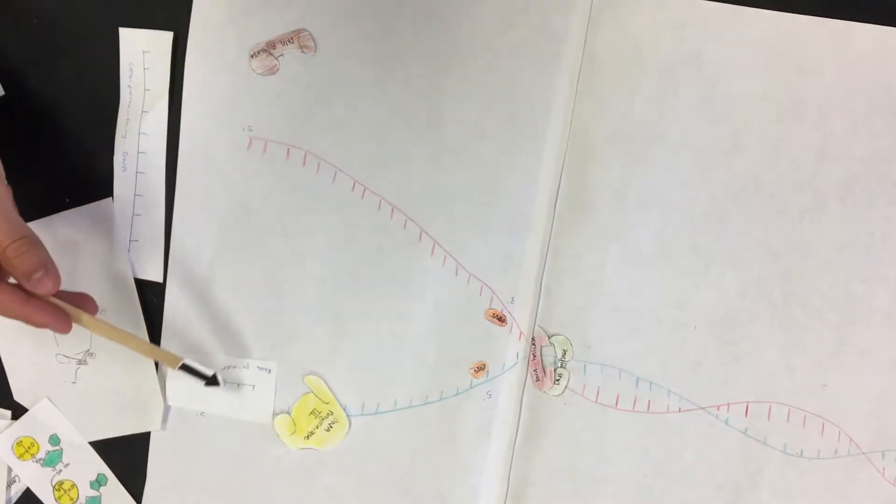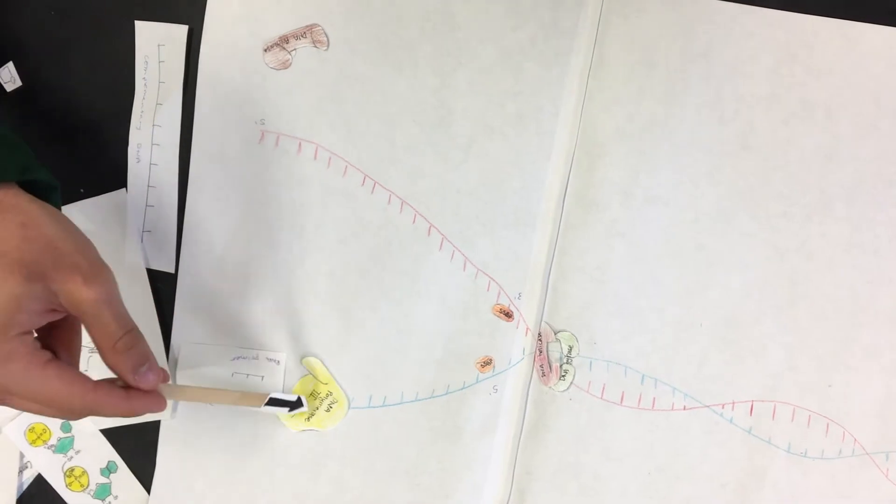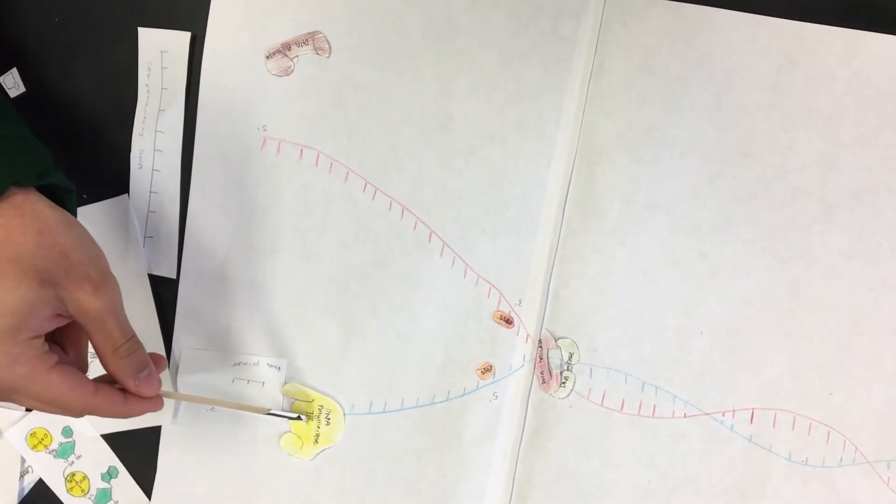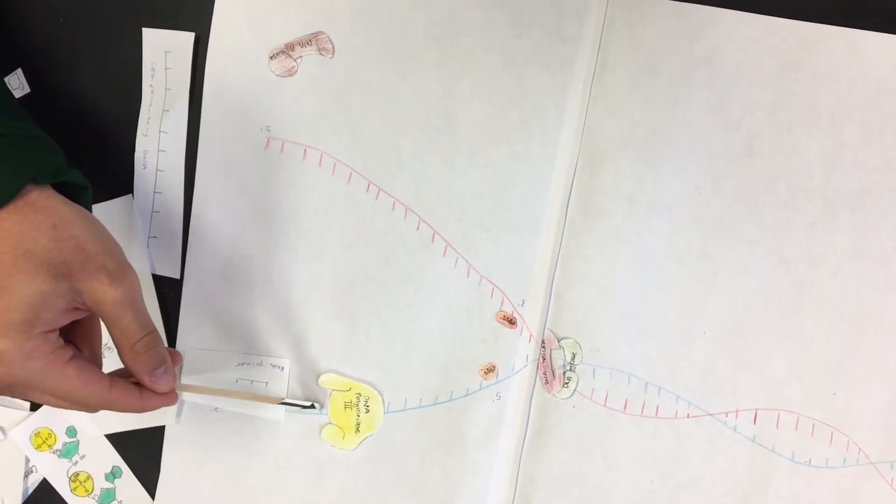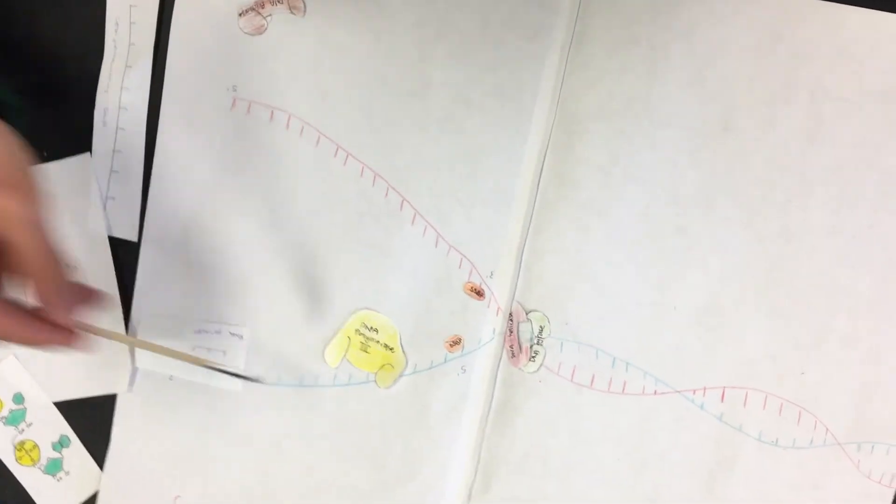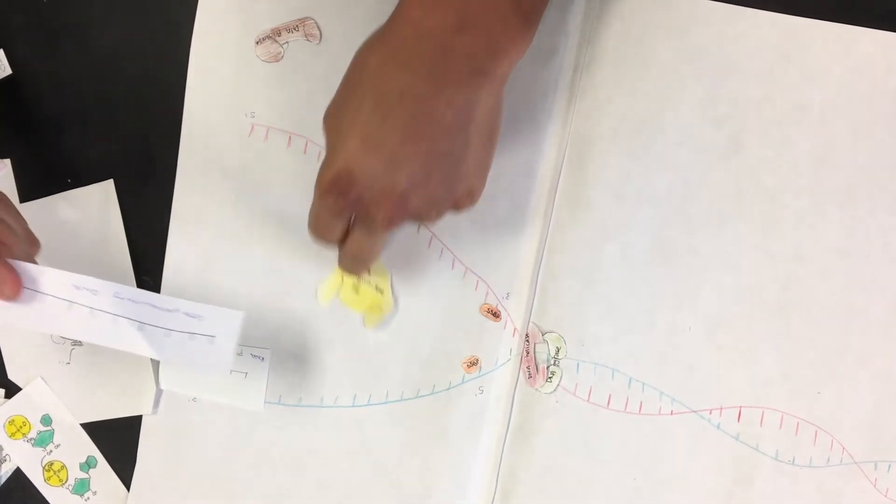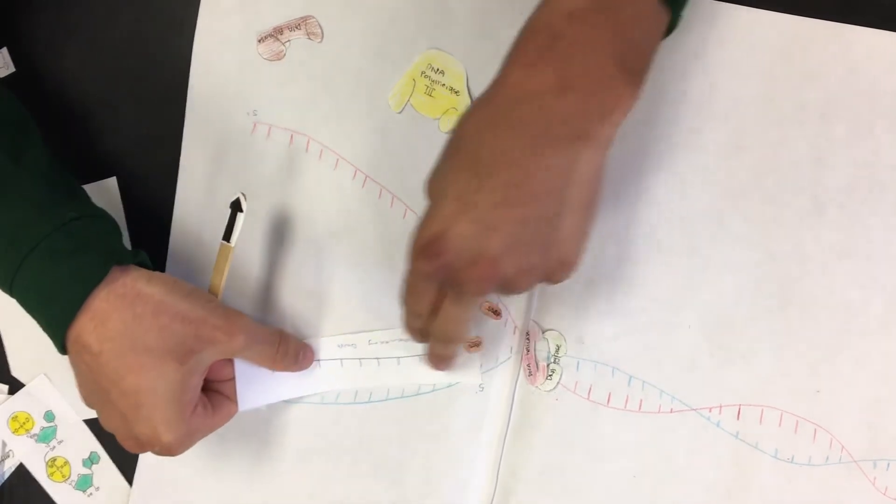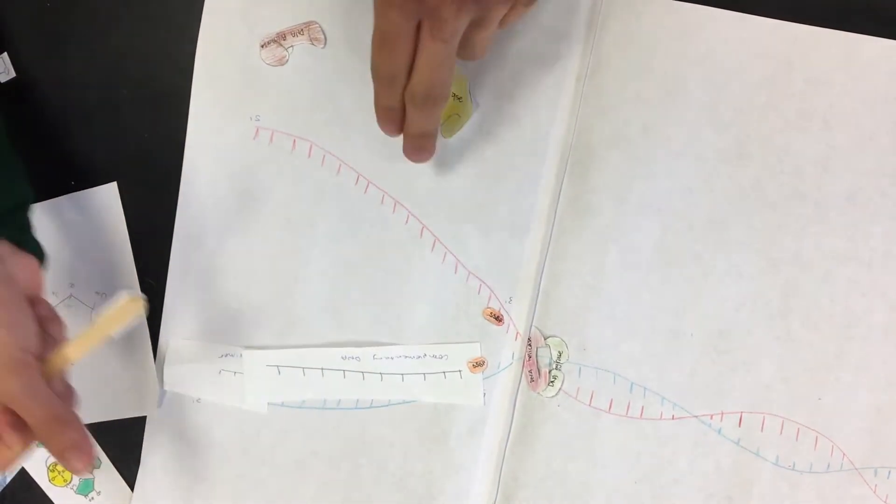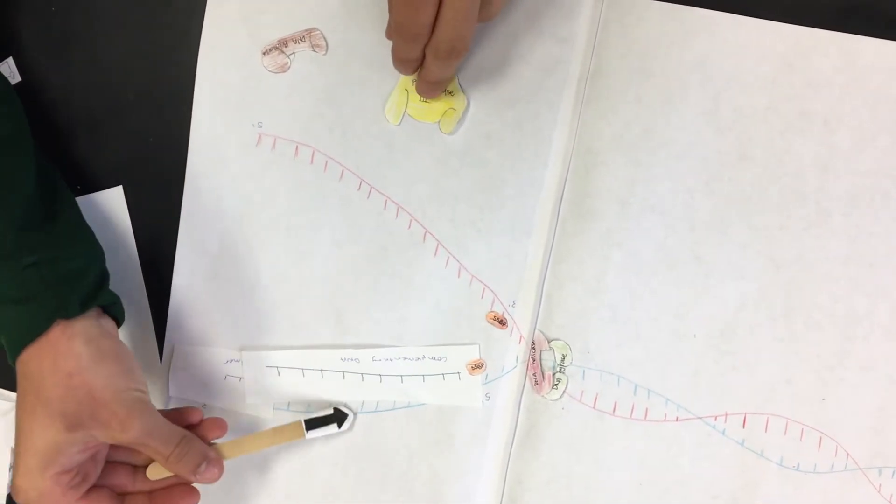So, now, since we have the DNA polymerase, the DNA polymerase 3 will start to copy and add these complementary DNA strands to the leading strand.